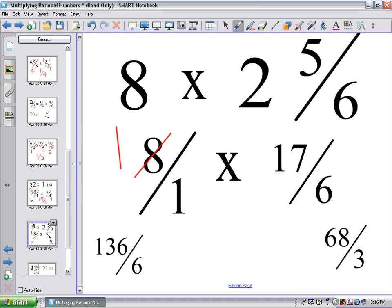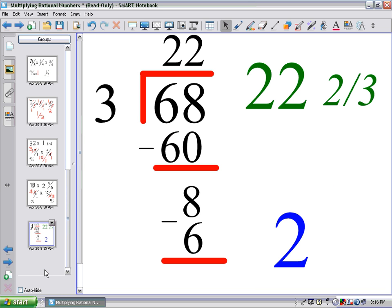So, to make 68 over 3 into a mixed value, you need to take the numerator, 68, put it inside the box. 3 goes outside the box. 3 goes into 6, 2 times, bring down a 6. That becomes 0, bring down the 8. 3 goes into 8, 2 times, that's a 6. And my remainder is 2. So, 22 becomes my whole value. Because the remainder is 2, it becomes the numerator of my fraction part. And the bottom of the fraction stays the same, and it stays 3. And this is how I convert this improper fraction to my mixed value.